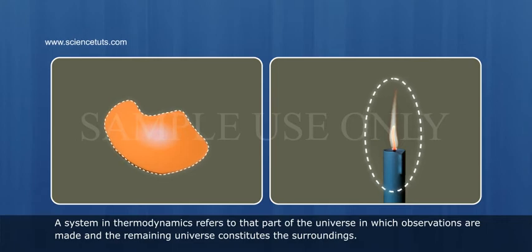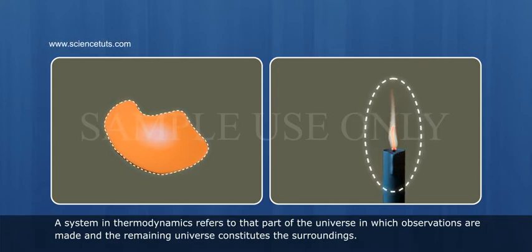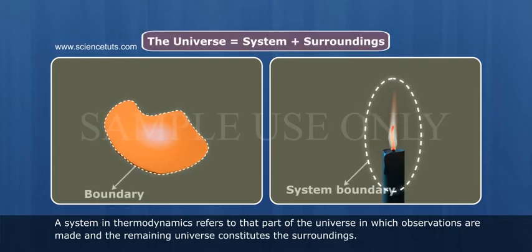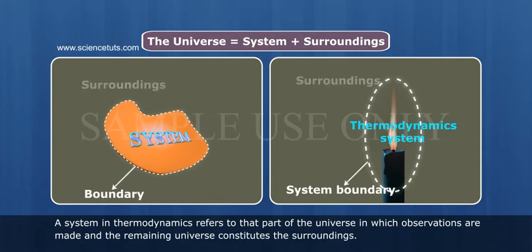Introduction. A system in thermodynamics refers to that part of the universe in which observations are made and the remaining universe constitutes the surroundings. The universe equals system plus surroundings.